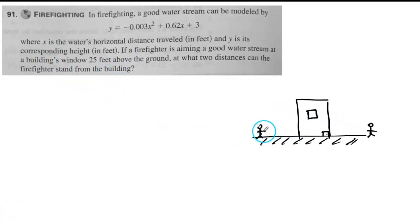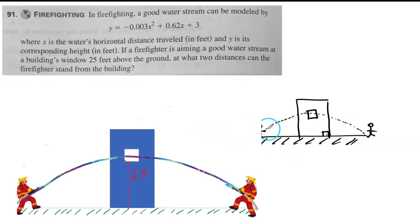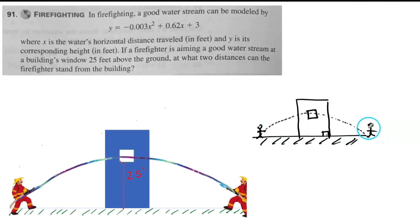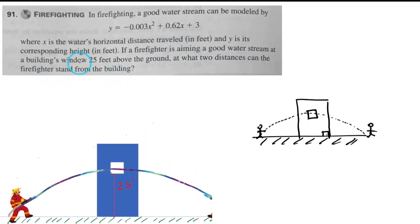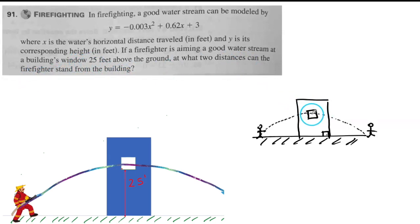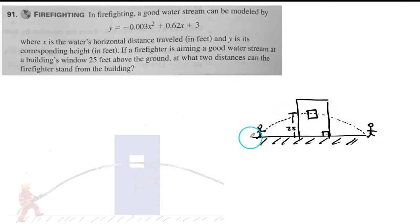So the idea: every time you're doing word problems, make a drawing so you understand what's going on. So here's the firefighter, the water, parabola opening down. He can be standing in two different spots on the left side or the right side. They're asking me, at what two distances can the firefighter stand from the building? We know that the window is 25 feet from the ground. The firefighter is on the ground.